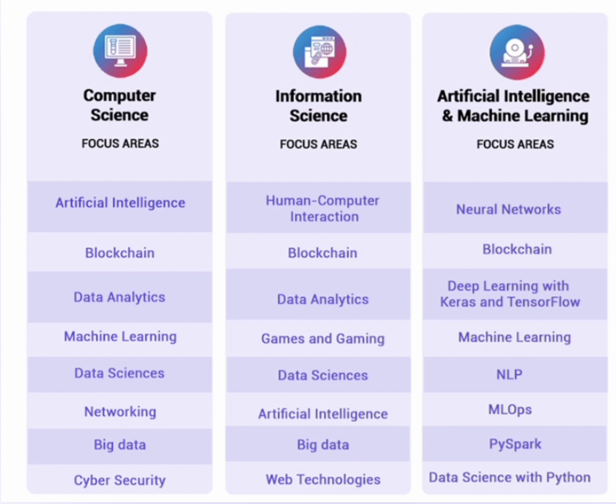You have to remember that whether you study computer science, information science, artificial intelligence and machine learning, or even electronics (ECE), all students are going to get placements in the IT industry. For ECE, around 70 percent of students get placed in IT and 30 percent in core electronics companies. Most of the same companies allow all branches, not just computer science.